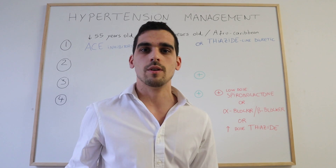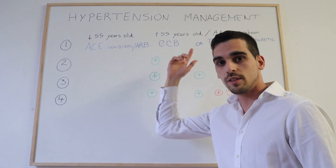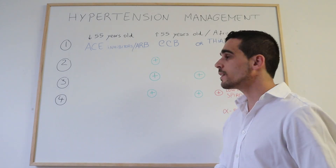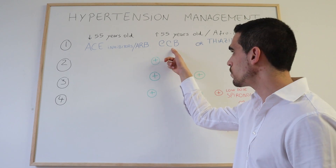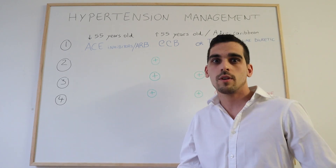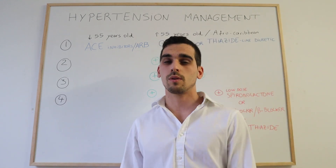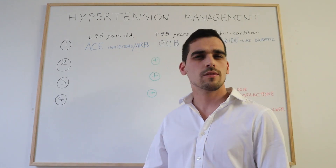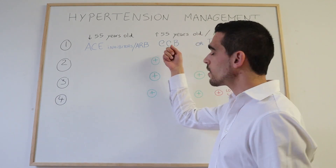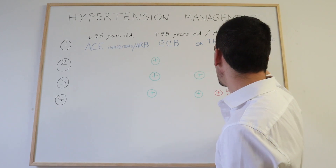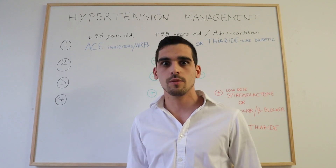Now let's look at another scenario: a newly diagnosed patient with hypertension who is older than 55 years old. In that case, we'll choose a calcium channel blocker to start with, such as amlodipine. However, some patients can develop peripheral oedema — swollen ankles — and if that happens the doctor might switch to a thiazide-like diuretic instead, such as bendroflumethiazide.